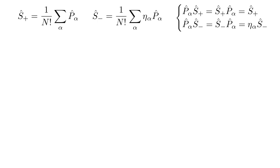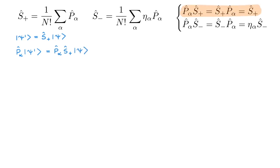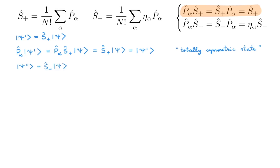Now that we know the S-operators are projection operators, we need to show they respectively project onto totally symmetric and totally antisymmetric states. Consider ket psi-prime obtained by the action of S-plus on an arbitrary ket psi. Applying any permutation P-alpha on psi-prime and using the property P-alpha times S-plus equals S-plus, the expression simplifies to psi-prime itself. This confirms psi-prime is totally symmetric. For S-minus, applying P-alpha on S-minus psi and using the analogous relation gives eta-alpha times psi-prime, confirming it is totally antisymmetric.